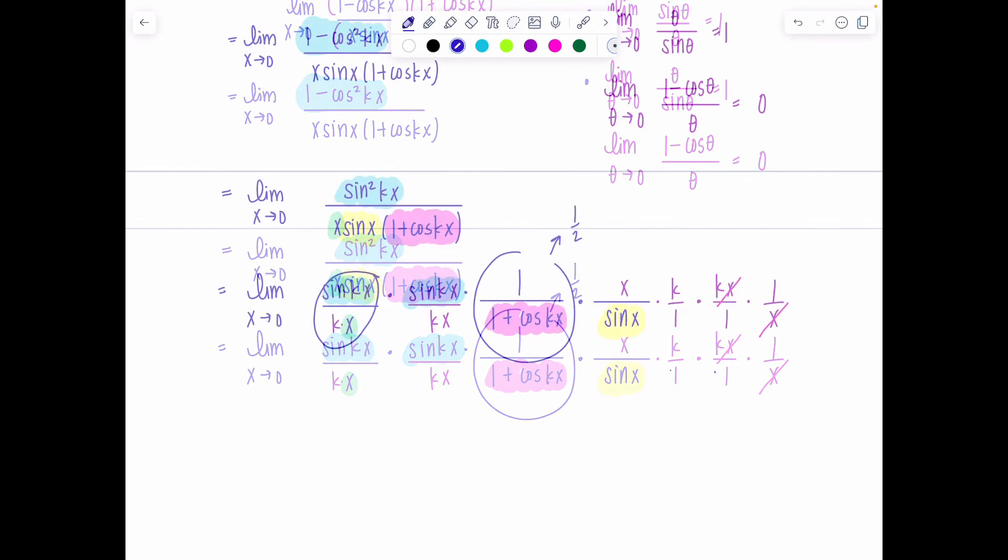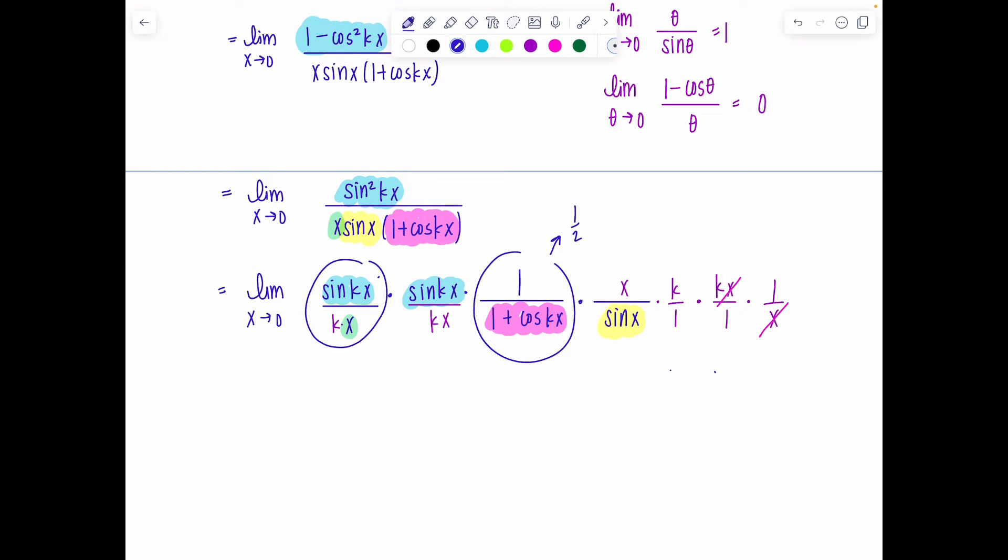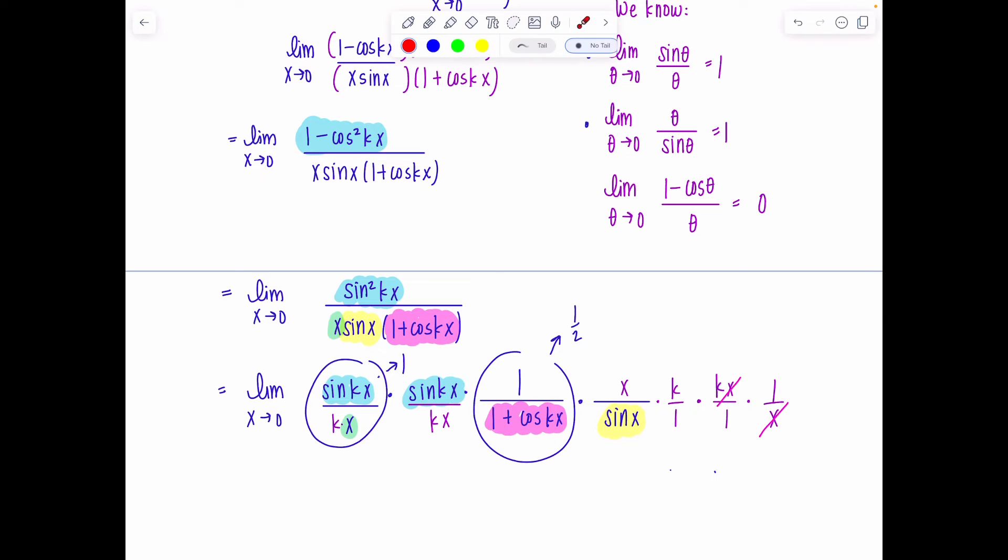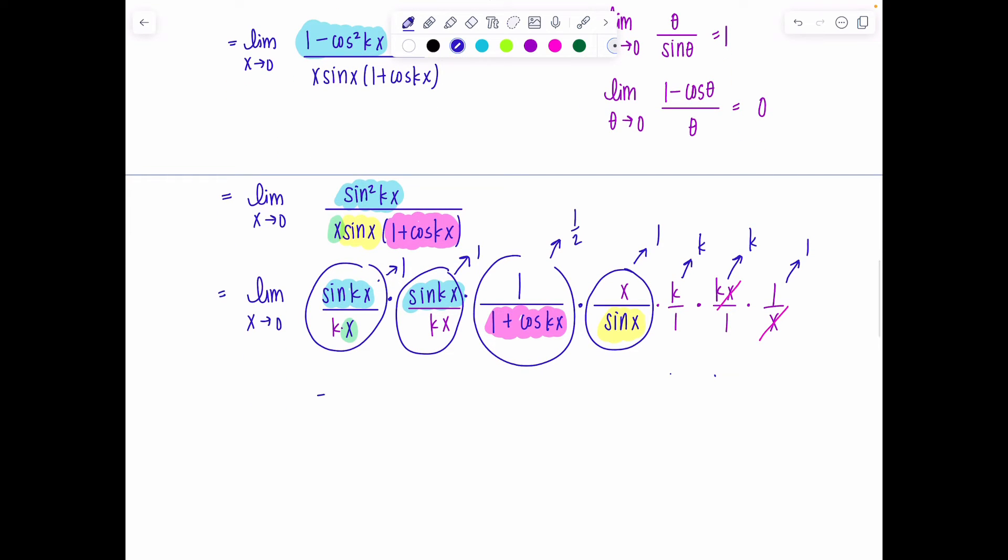This first term here, sin(kx), this whole thing is going to one. This is sin(theta)/theta. Same thing for the next term. This goes to one. This we already know 1/(1 + cos(kx)) goes to a half. x/sin x, that goes to one. K is just a constant. Stays the same. And then here's one. So what am I left with? My limit is 1 times 1 times 1/2 times 1 times k times k times 1, which is (1/2)k². Beautiful. There's our limit.